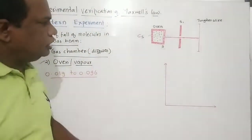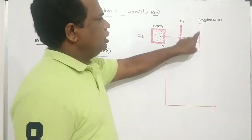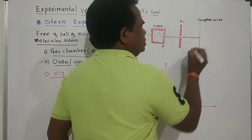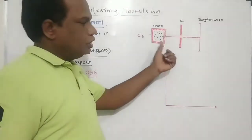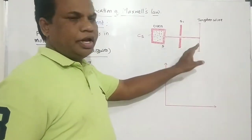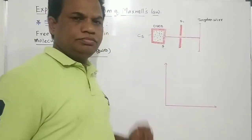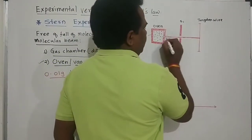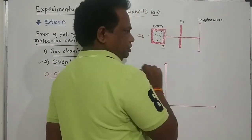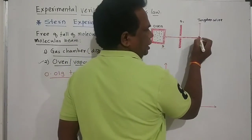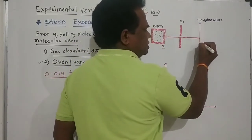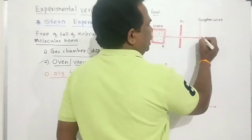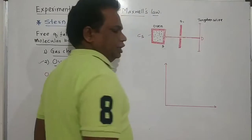The experiment consists of oven O1, slit S1, and a tungsten wire. This tungsten wire is cylindrical. Under no gravity, these molecules would travel in a straight direction and fall on the tungsten wire at a particular point.